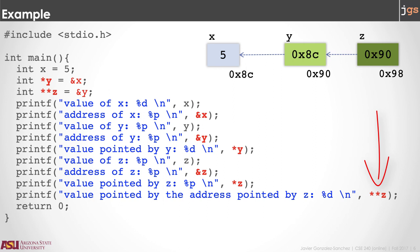This is similar to what happened with arrays. You can have unidimensional arrays, bidimensional arrays, three-dimensional arrays, and so on by adding pairs of square brackets. Here, you can have pointers, pointers to pointers, pointers to pointers to pointers, and so on by adding asterisks in the declaration between the type and the name of the pointer.